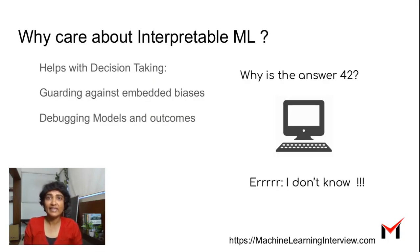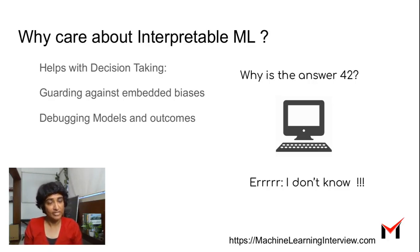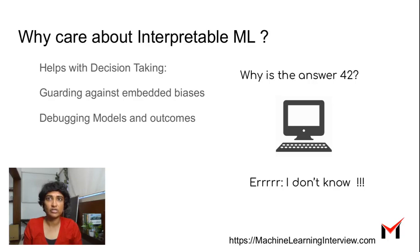So why do we care about interpretability in ML? First, it helps with decision making. Understanding why a model came up with the outcome that it did helps hone business processes. For instance, if we see that one of the features is more important than others, we could get more data to make sure we cover all particular values for that feature.